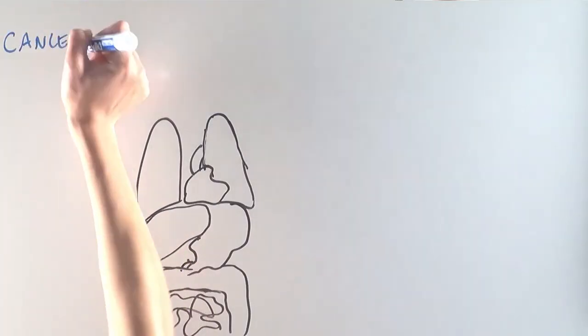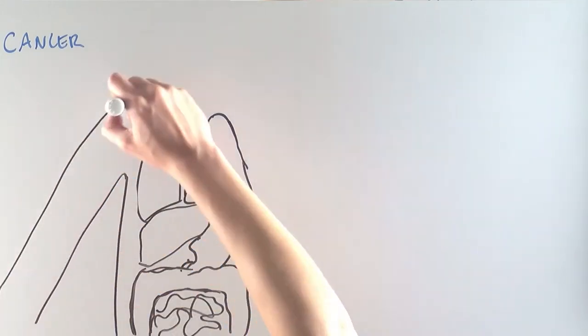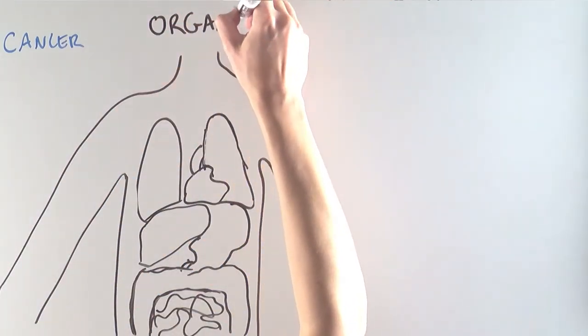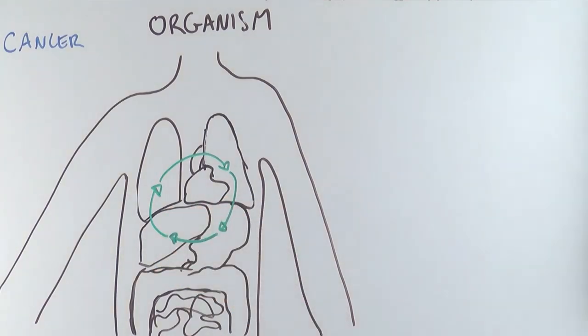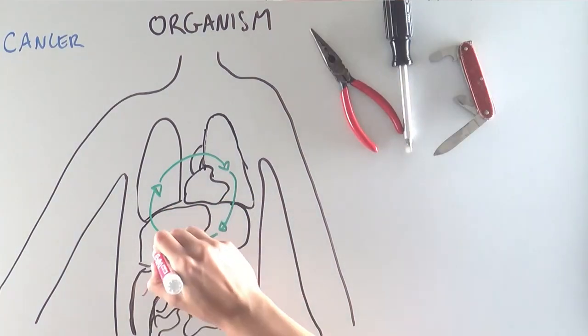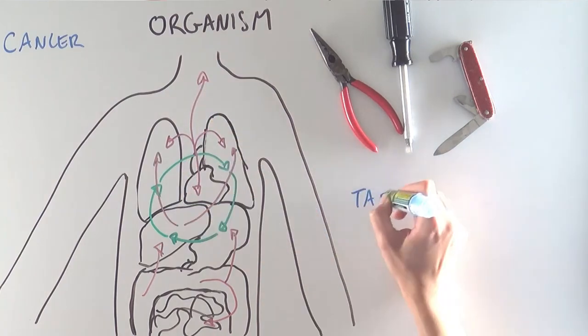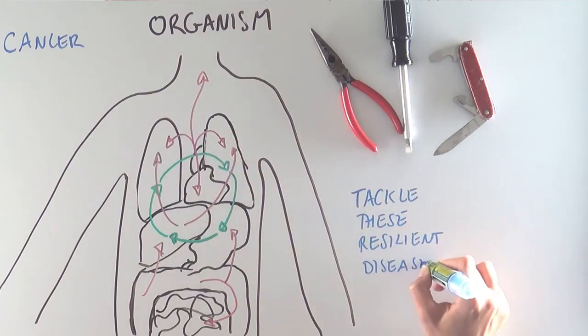So as you can tell, scientists are studying cancer not only at the organ level but at the organism level. By trying to understand how biology in one organ can influence biology in another, we are developing powerful tools to understand our complex physiology and tackle these resilient diseases.